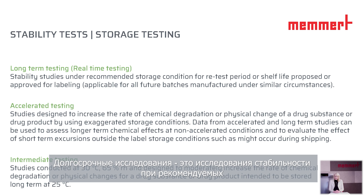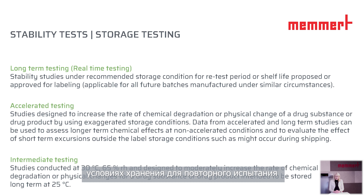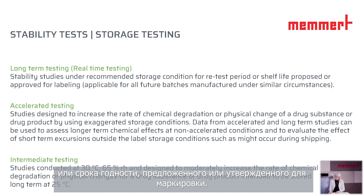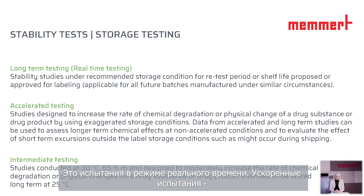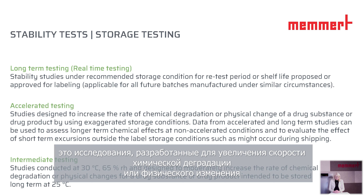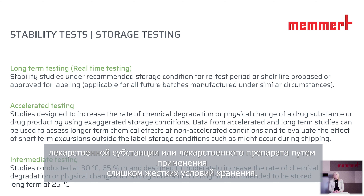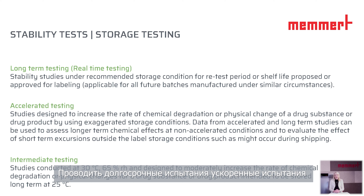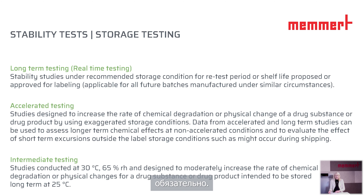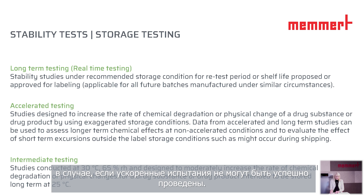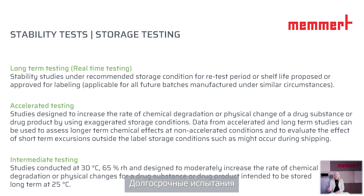Once the objective of the stability study is stipulated and the method is certain, the drug is evaluated under a larger scale. There are three main study types: long-term studies, accelerated studies, and intermediate studies. Long-term testing is performed under recommended storage conditions for the proposed retest period or shelf life — this is real-time testing. Accelerated testing uses accelerated storage conditions to increase the rate of chemical degradation or physical change. Long-term and accelerated testing are both mandatory. Intermediate testing comes into effect if accelerated testing cannot be successfully completed, starting at 30°C and 65% RH, provided long-term testing is done at 25°C and 60% RH.